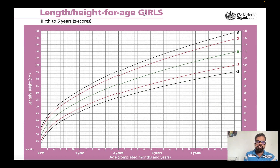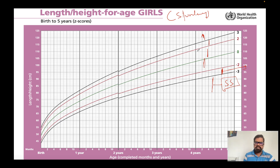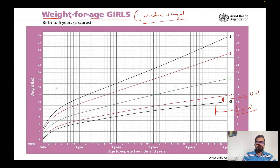For height-for-age, we check for stunting. If the plotting falls below minus two, it is stunting; if it falls below minus three, it is severely stunting. The area above minus two is not a problem. Above three is rare but could suggest an endocrine disorder such as a growth hormone issue. The same applies for boys — below minus two is stunting, below minus three is severely stunting. Age is on the x-axis and length in centimeters is on the y-axis.